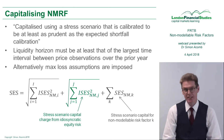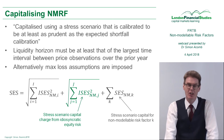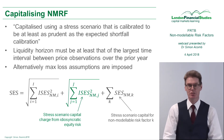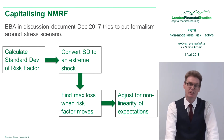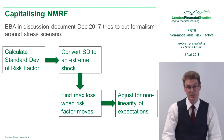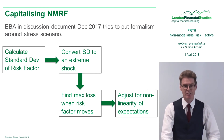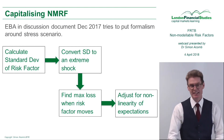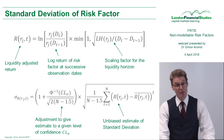The initial standards document states that non-modelable risk factors will be capitalized using a stress scenario that is calibrated to be at least as prudent as the expected shortfall. One thing the Basel Committee has not yet specified is how to construct those stress scenarios. There is a discussion document from the EBA — the European Banking Authority — dated December 2017, which tries to put some formalization around how to build these stress scenarios.